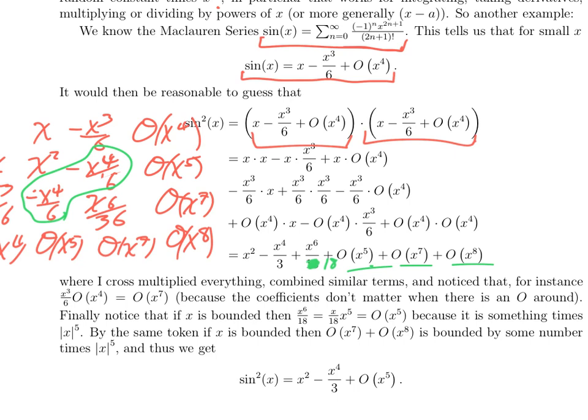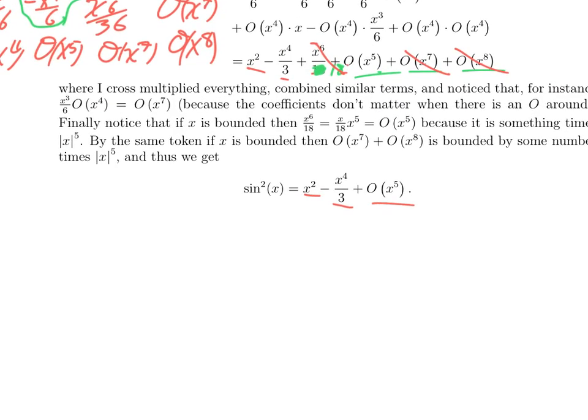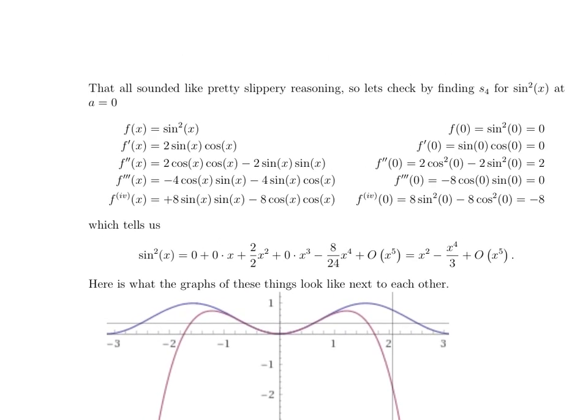And then here we get O of x to the 5th, when we multiply x times O of x to the 4th, same thing here. x cubed times something times x to the 4th is O of x to the 7th. And O of x to the 4th times itself is O of x to the 8th. So we end up with x squared minus x to the 4th over 3, because there are two of these terms. And then this is a mistake, that should be x to the 6th over 18. So we get a nice polynomial plus three O of x terms. But notice, x to the 6th over 18 is x over 18 times x to the 5th. And as long as x is bounded, that's also bounded by a multiple of x to the 5th. O of x to the 7th is some constant times x squared times x to the 5th. But if x is bounded, that's a multiple of x to the 5th. So higher powers of O can get absorbed into an O term.